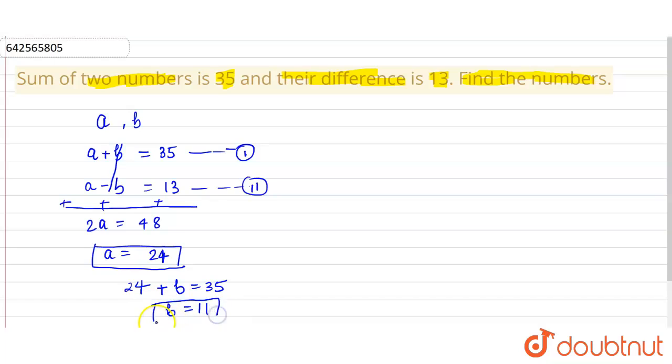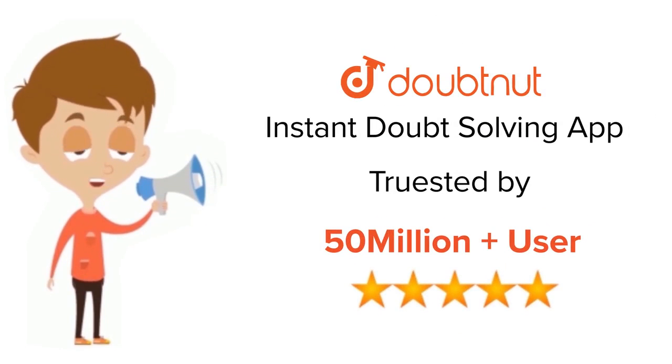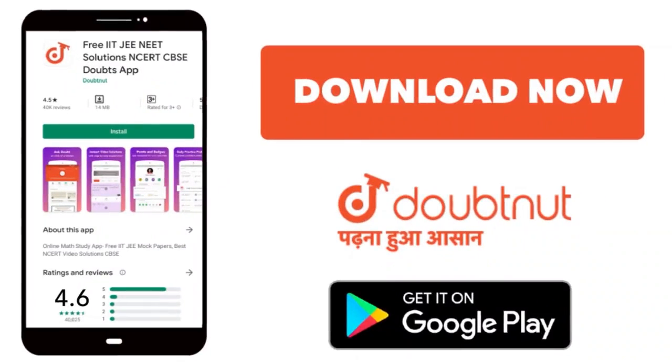So the numbers are 24 and 11. For class 6 to 12, IIT-JEE and NEET level, trusted by more than 5 crore students. Download doubtnet app today.